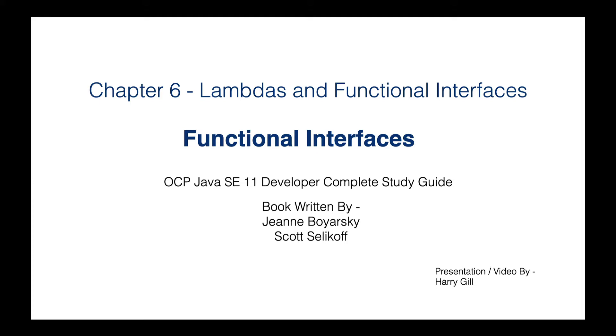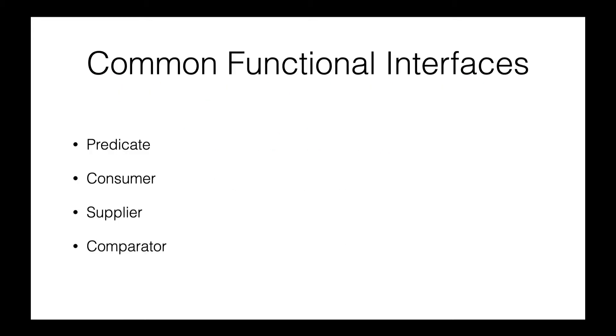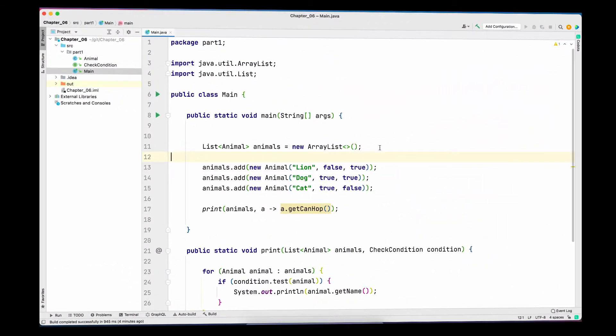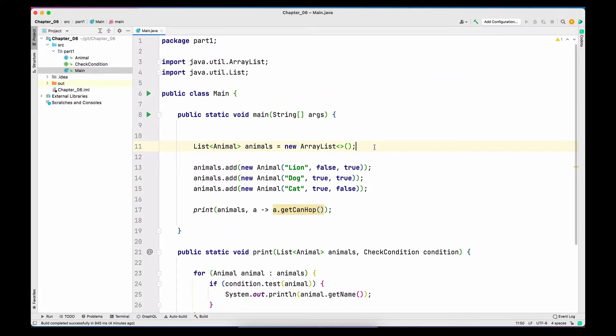In this video we are going to look into functional interfaces, and we will look specifically into four functional interfaces that are very commonly used. We will look into Predicate, Consumer, Supplier, and Comparator. A functional interface is an interface that has one and only one unimplemented method. The four interfaces we will be discussing are already present in the Java library.